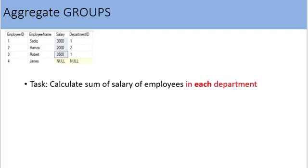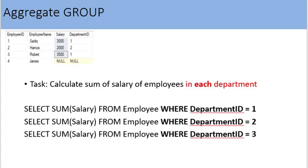Here is another task: calculate sum of salary for employees in each department. One way is to write separate SELECT statements for each department and filter records using WHERE clause. So if there are 3 departments, we write 3 SELECT statements — but the results of each will be a different relation. If there are dozens of departments, there is a better way: write only one SQL SELECT statement using GROUP BY clause to get salary sums for each department in a single relation.